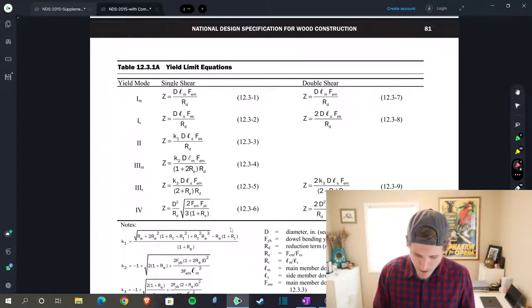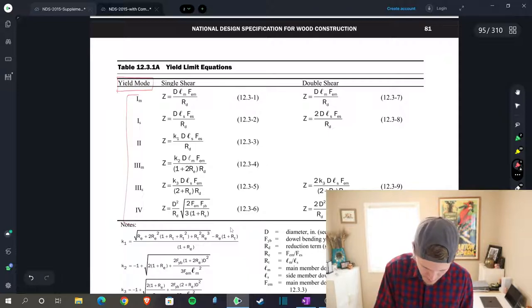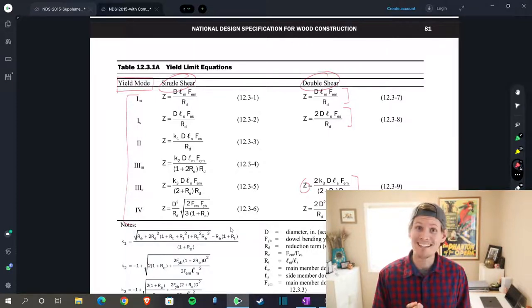Then you can get z prime and move on from there. But those tables that we pulled from already went through and determined the capacity of all the different yield modes—you can see single shear, double shear. They already went through kind of the labor of running these calculations for the specific condition that we have.